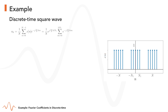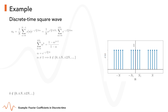We now have a factor multiplying a summation from M equals 0 until 2 capital N1 of a geometric series. The ratio of this geometric series is alpha equals e to the power of minus j 2 pi over capital N times K.